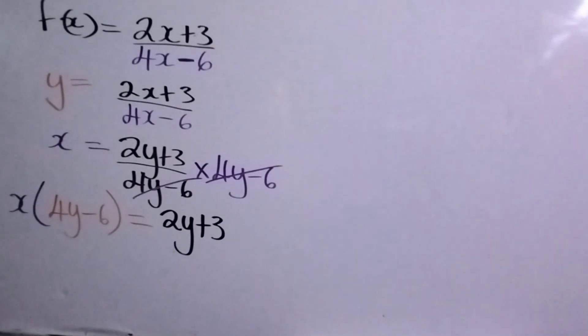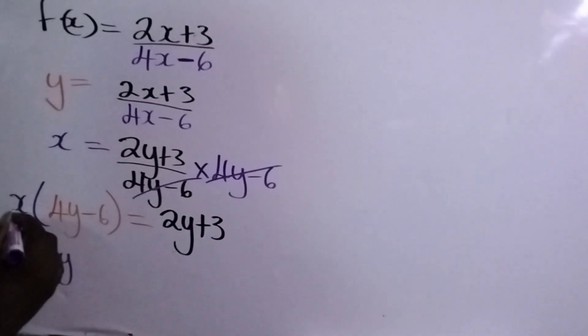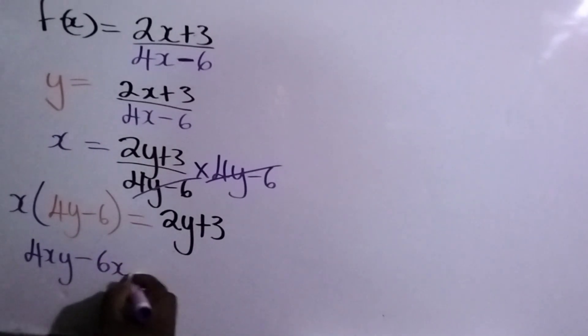And we're left with this. So we're left with the numerator which is 2y plus 3. So remember in math, the bracket means to multiply. So we're going to expand the bracket, so we're going to multiply now.